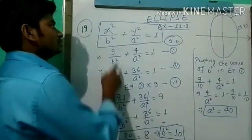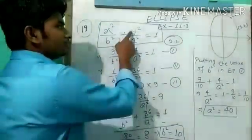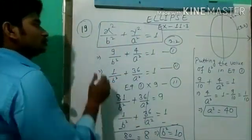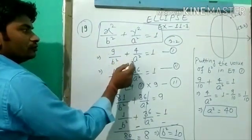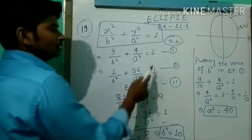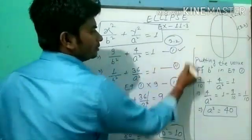Where x is 3 and y is 2, we get 9/b² + 4/a² = 1. This is our first equation.